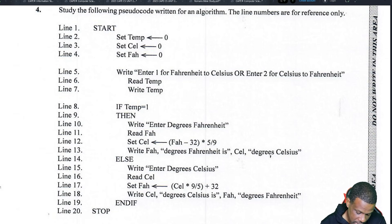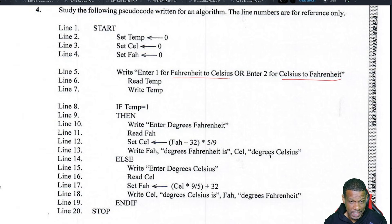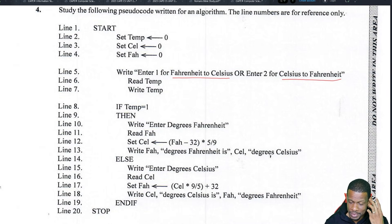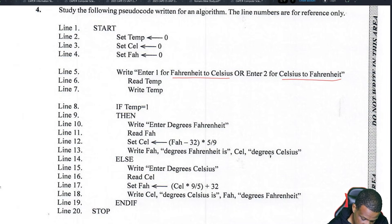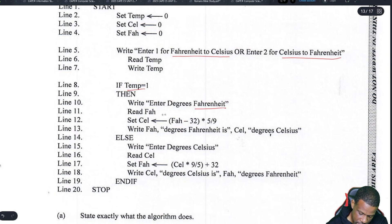The algorithm sets new temperature variables — Celsius and Fahrenheit — to zero, then prompts the user to enter one for Fahrenheit to Celsius or two for Celsius to Fahrenheit. If the user chooses one to go from Fahrenheit to Celsius, it asks them to enter the temperature, reads it, calculates it, and then prints it out.